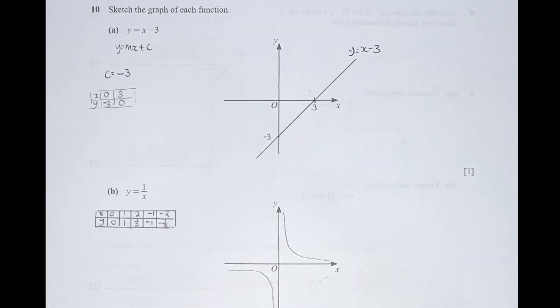Question 10 is a newly added part. For the first one, sketching y equals x minus 3, I draw out the box. I need to find the x-intercept and y-intercept by setting x equals 0, which gives y as negative 3, and setting y equals 0, which gives x as 3. Through this, I'm able to draw out the line.